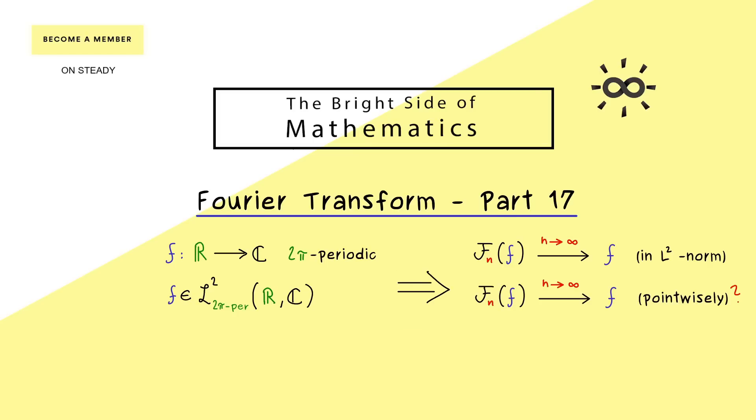We always have that convergence, but it does not tell us anything about the pointwise convergence. To get this, we definitely need some additional requirements. In the last two videos we discussed a sufficient condition: if we have a continuous function which is also piecewise C¹. In that case, the Fourier series converges uniformly to the function f, which always implies pointwise convergence.